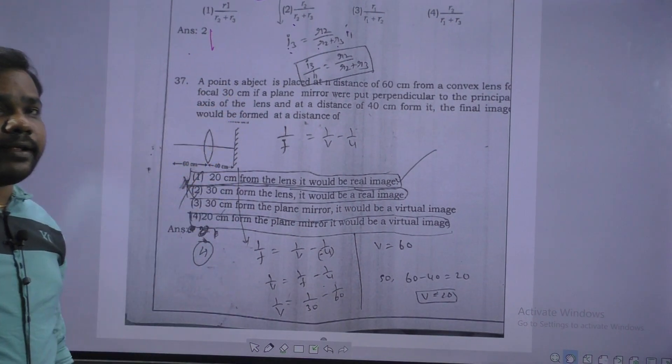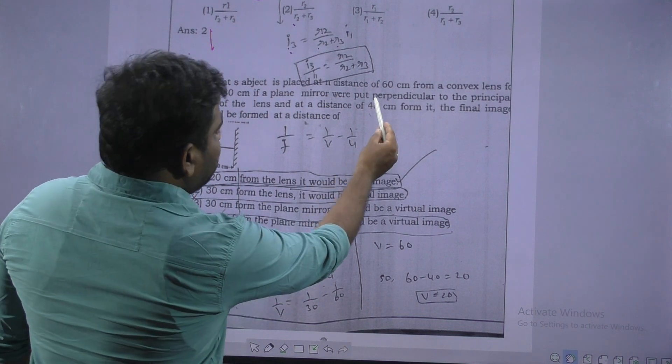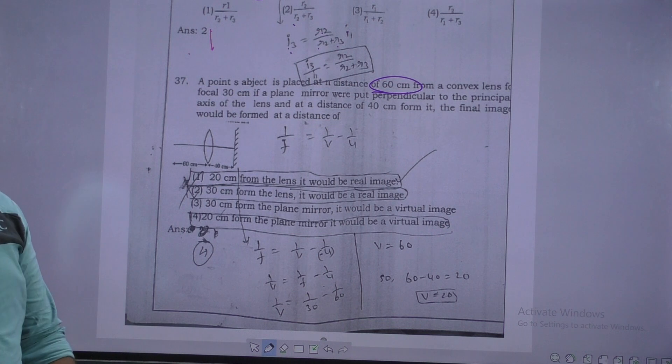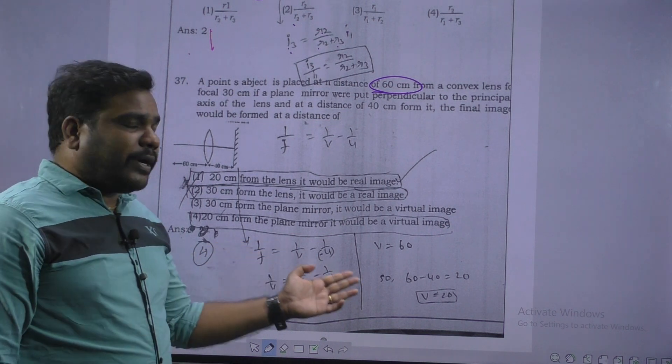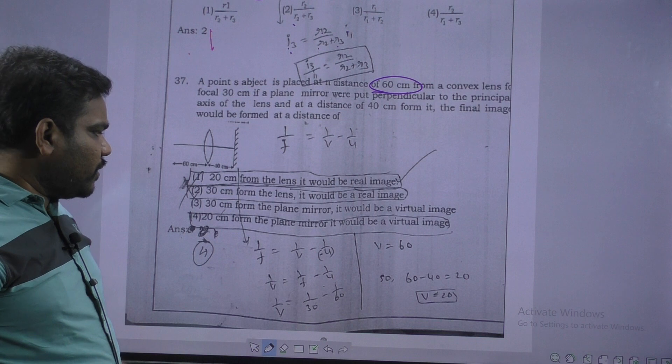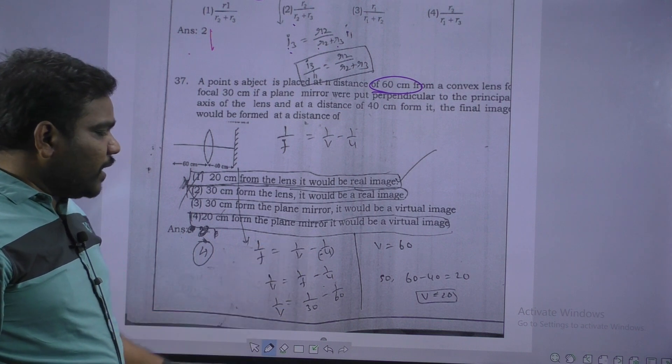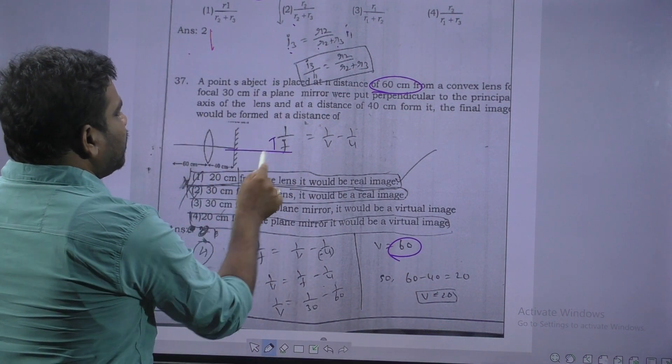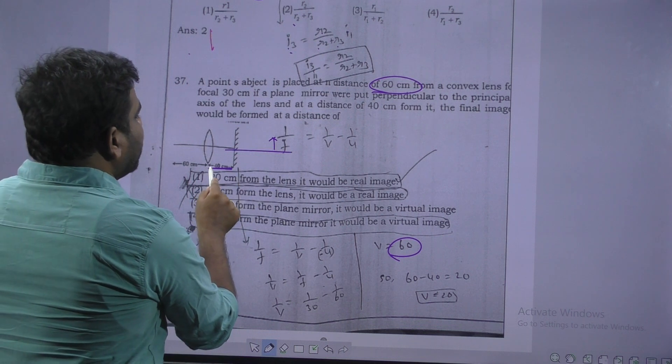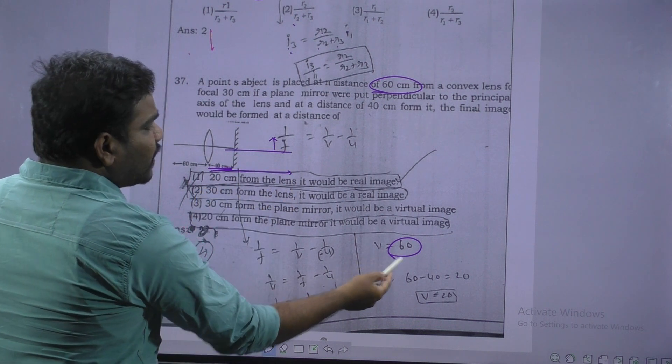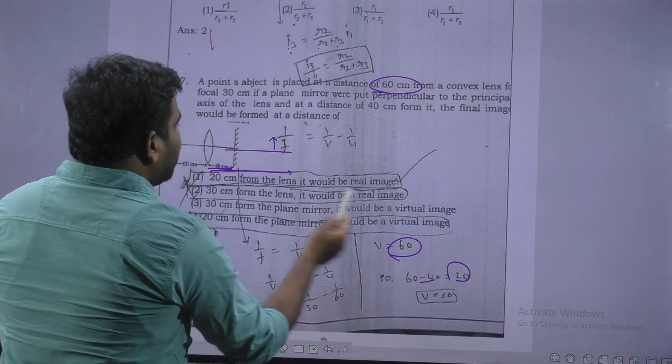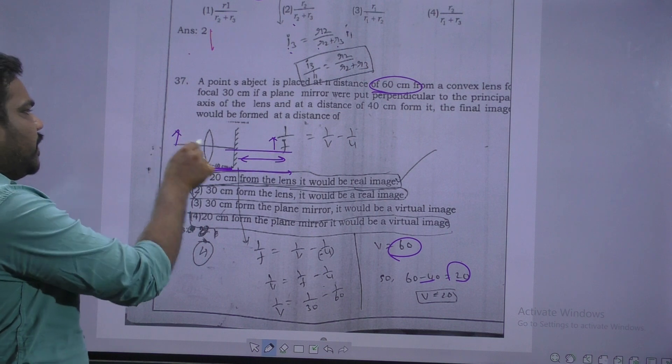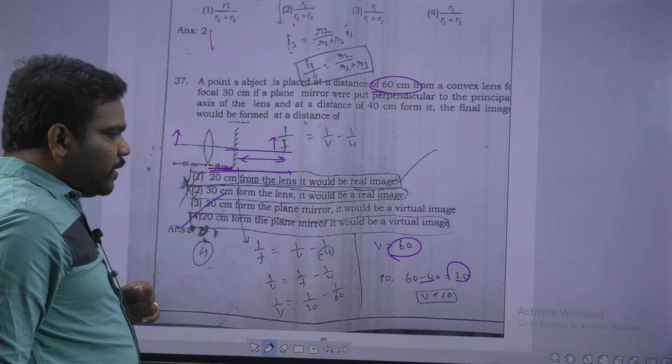Next question. Convex lens and plane mirror given. Object is placed at 60 cm from the convex lens. You know 1 by F equal to 1 by V minus 1 by U. After sign conversion, F value given, U value given. So after calculation of V, it will be 60. That means there is image formed here. Here is already given 40. Total after calculation 60. So 60 minus 40, it is 20. From plane mirror, that is virtual image. Because object is real, image is virtual. Option 4 is correct.